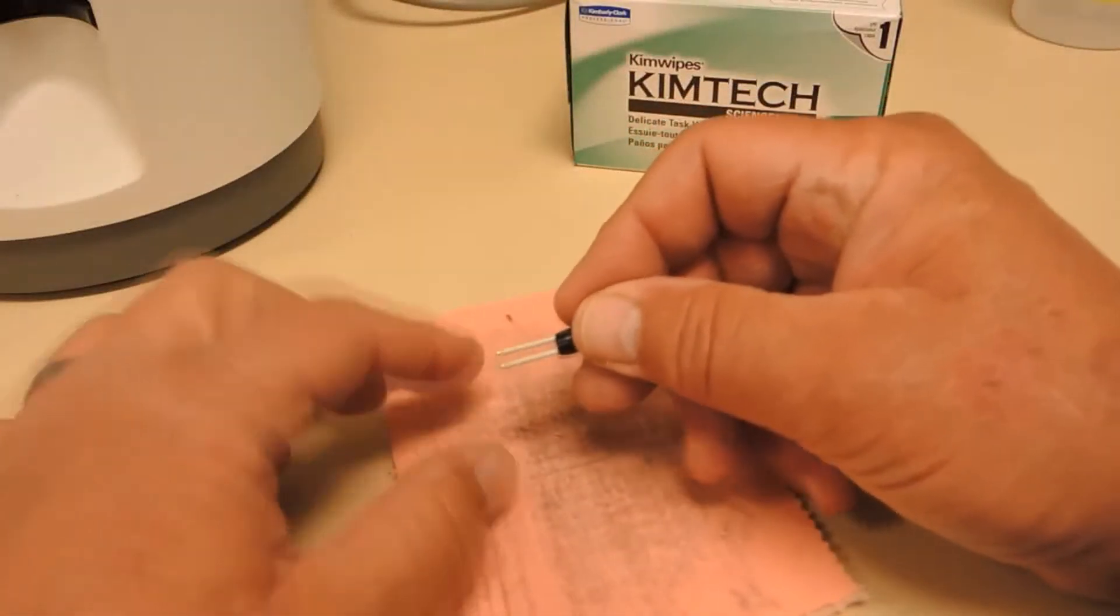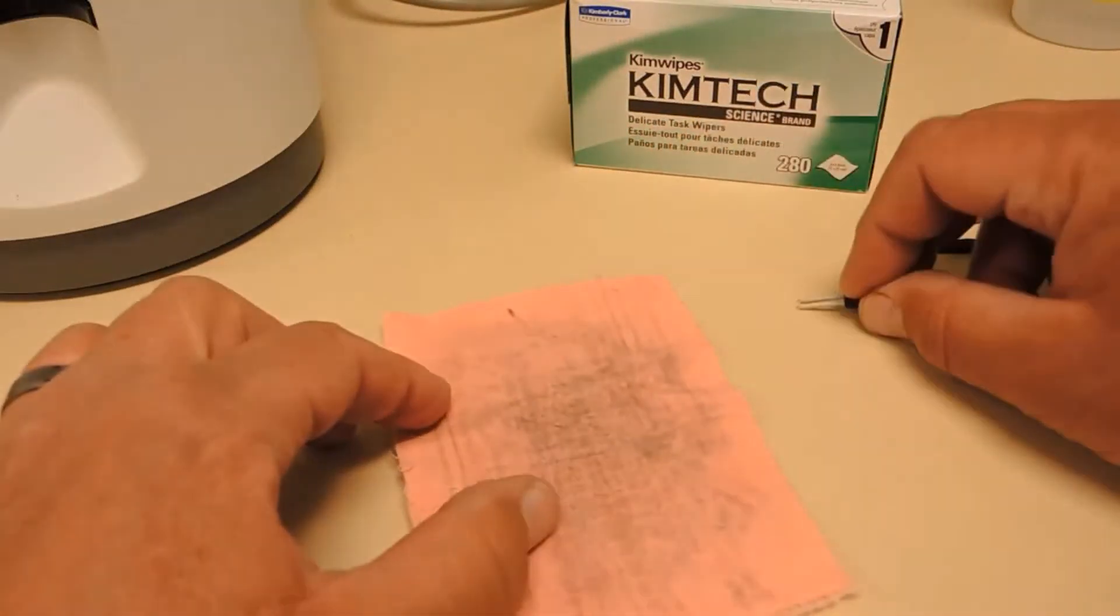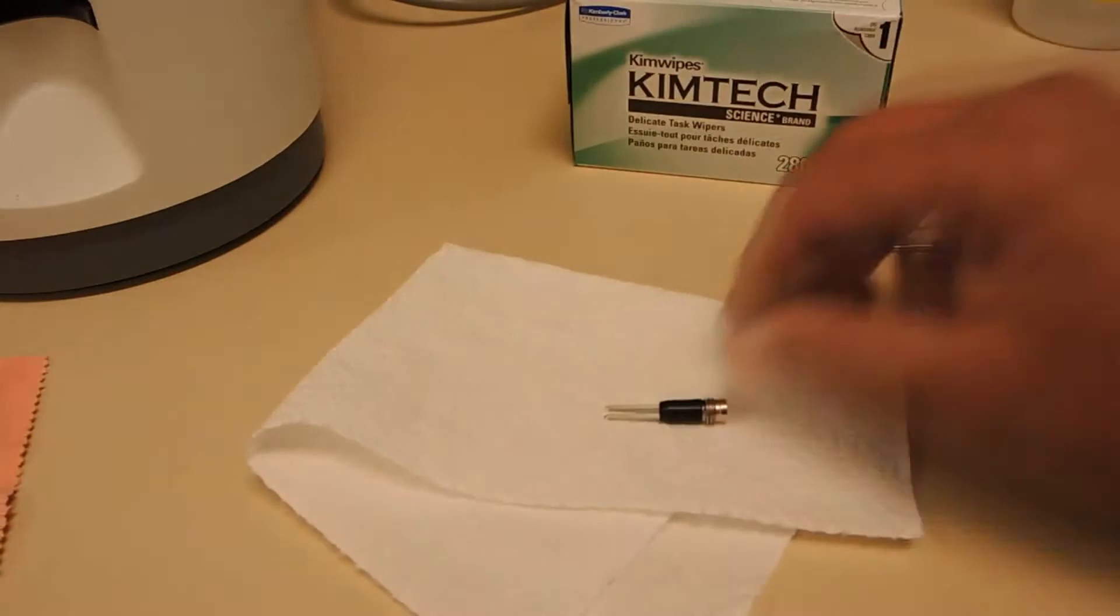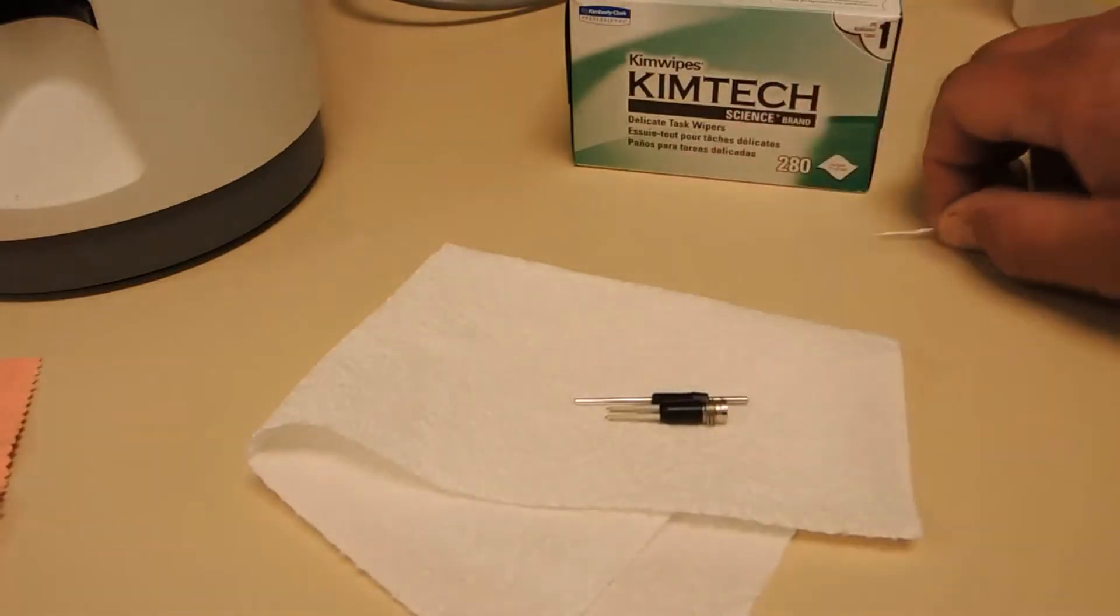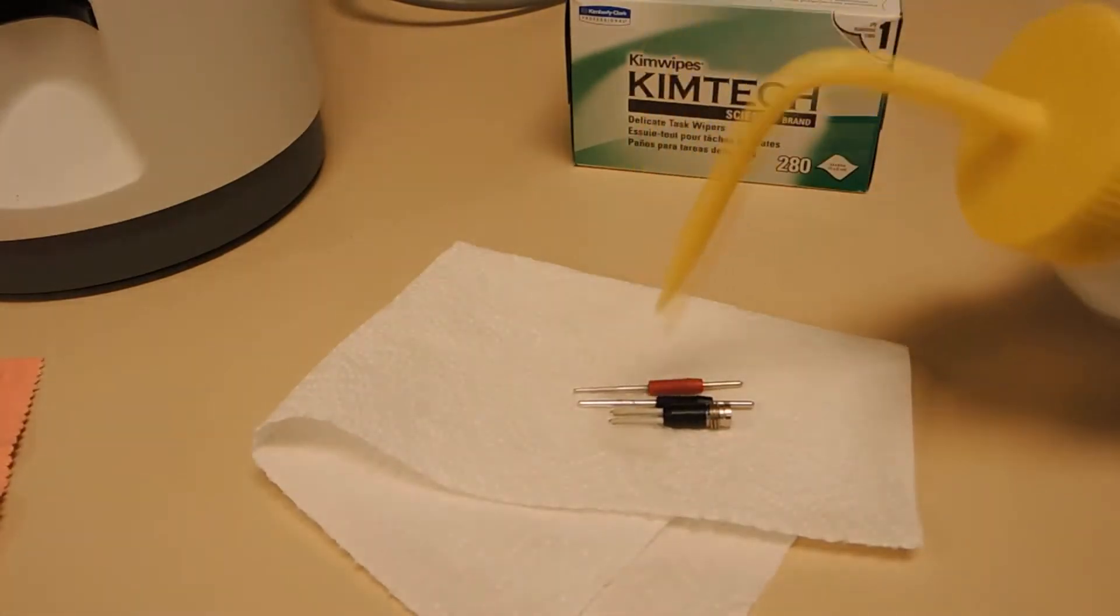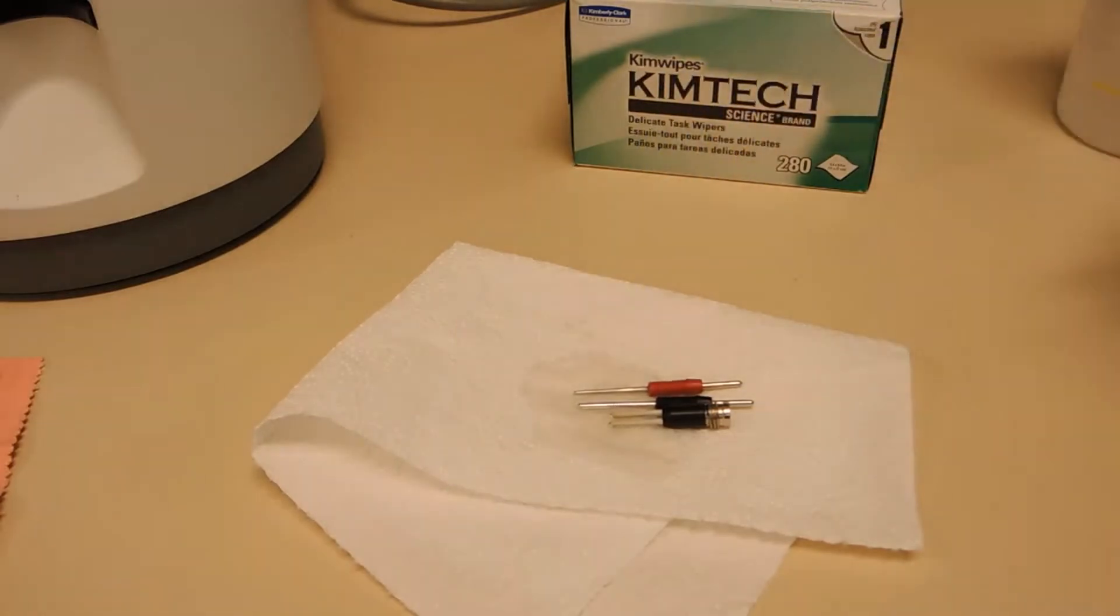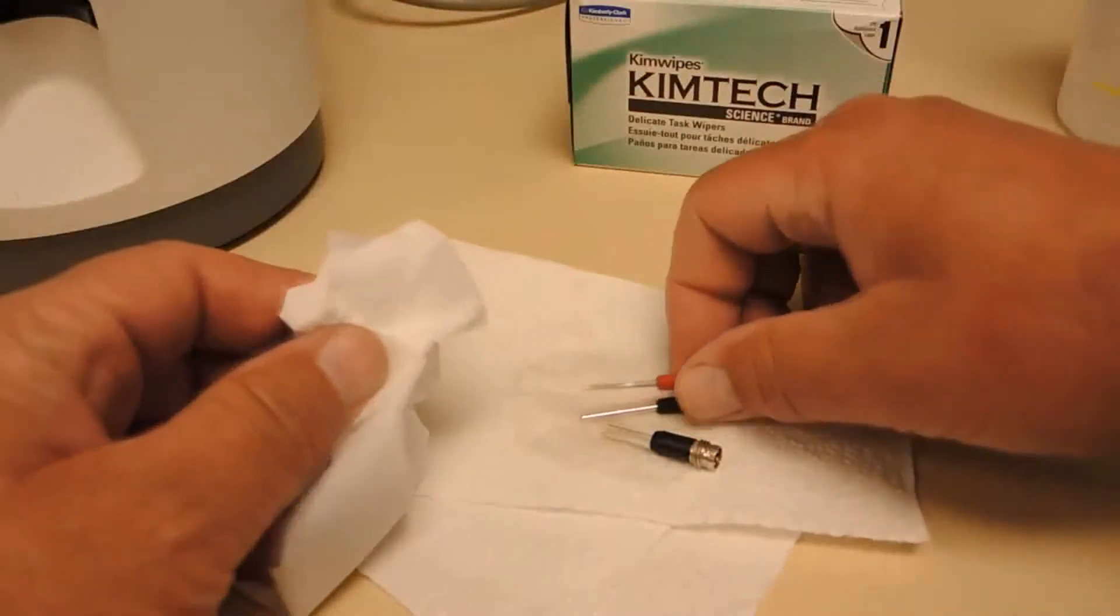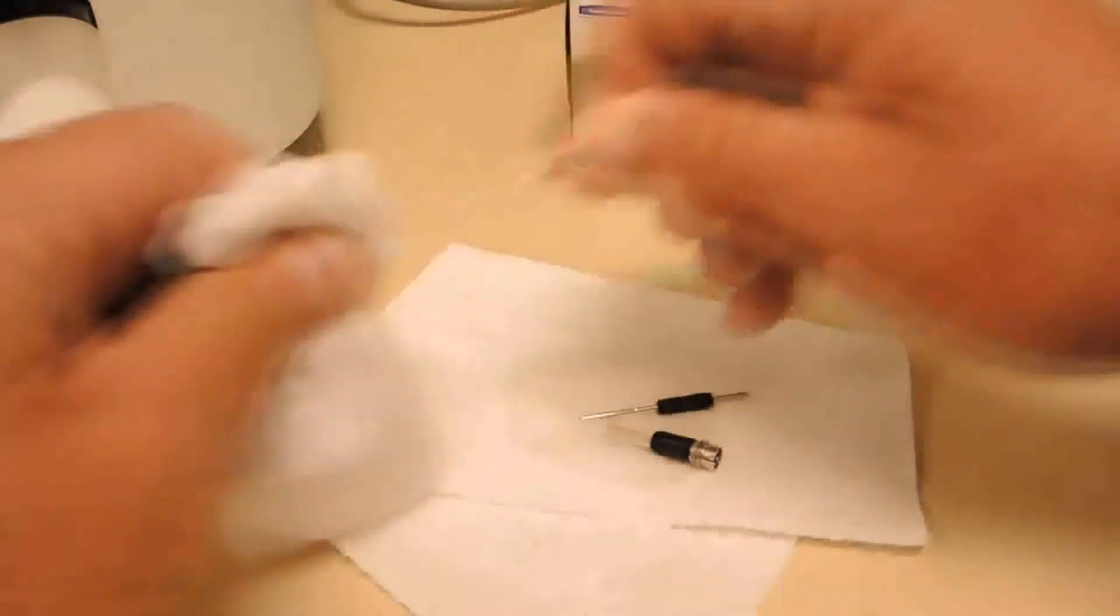And after you've got that done you make sure the electrodes are straight, and then the next thing you'll do is rinse them off with DI water to remove any of the silver cleaning compound that may be on them. Rinse them off with DI water and then dry them with the chem wipe.